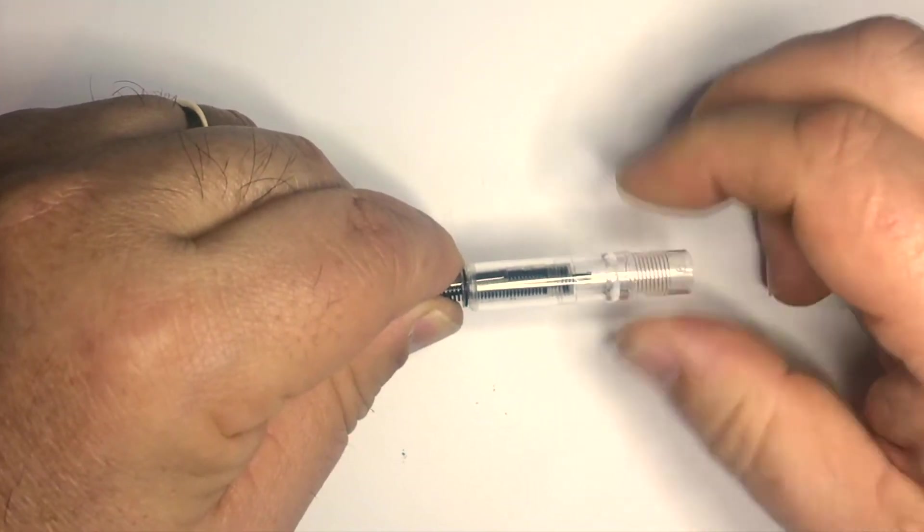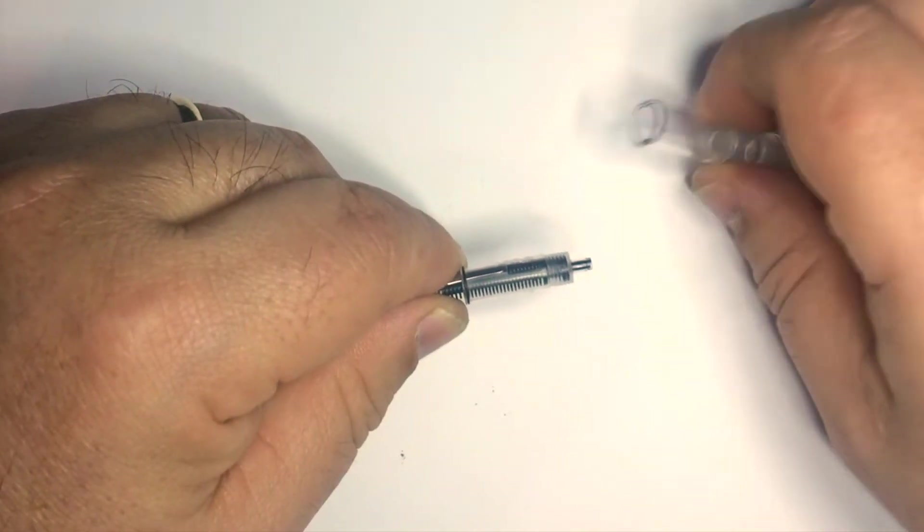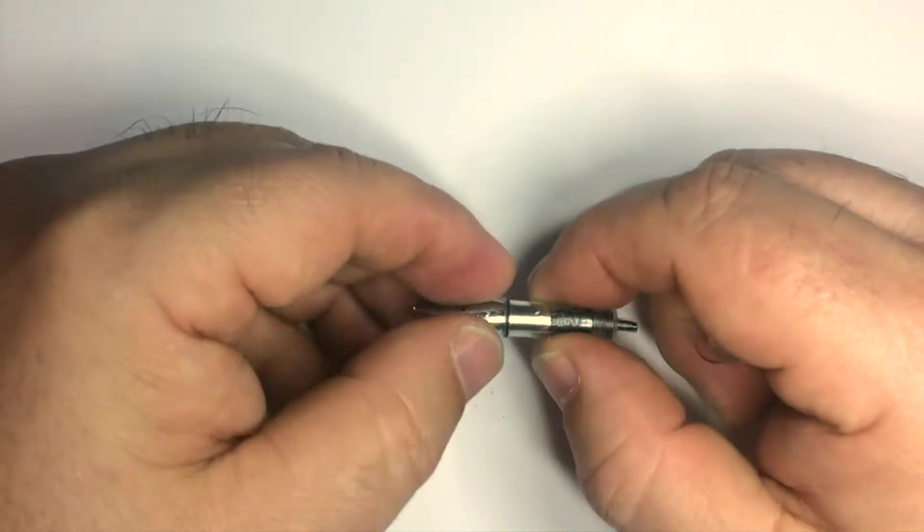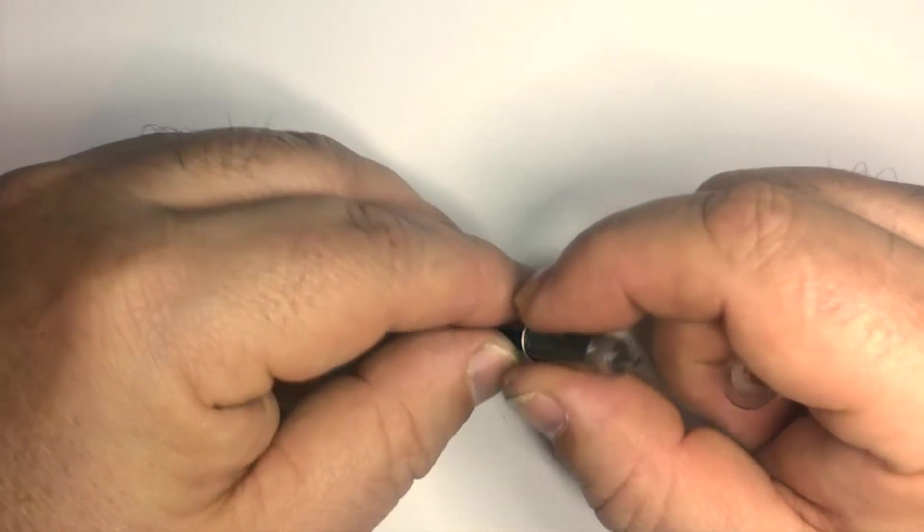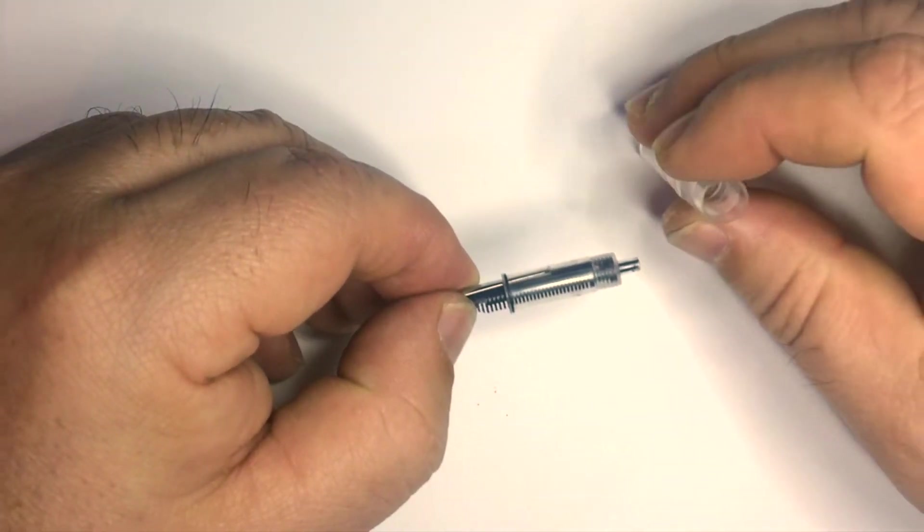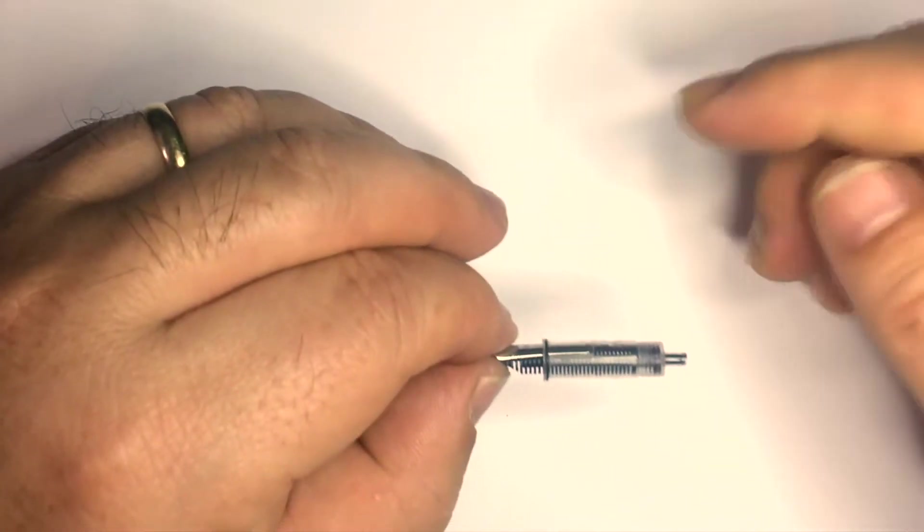So this has something else. This has a nib unit. There are threads in here, and this comes out as a single piece. You can see the back of the feed is going up into the tail of this unit here.